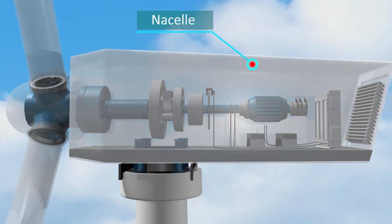Nacelle. The brake, controller, gear box, generator and shafts are enclosed in a huge casing called the nacelle.